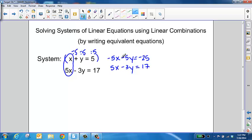Now that we have opposite terms here, we can combine our two equations together by adding them. So negative 5x plus 5x is going to add out to 0. We have a negative 5y plus a negative 3y, which is going to give us negative 8y. Negative 25 plus a positive 17 is going to give us a negative 8. And then if we divide both sides by negative 8, we get y equals a positive 1.